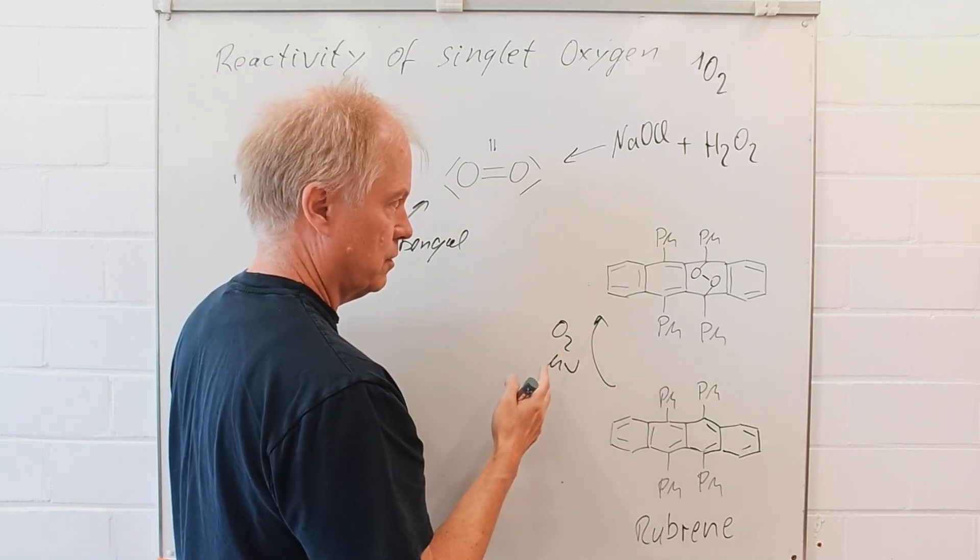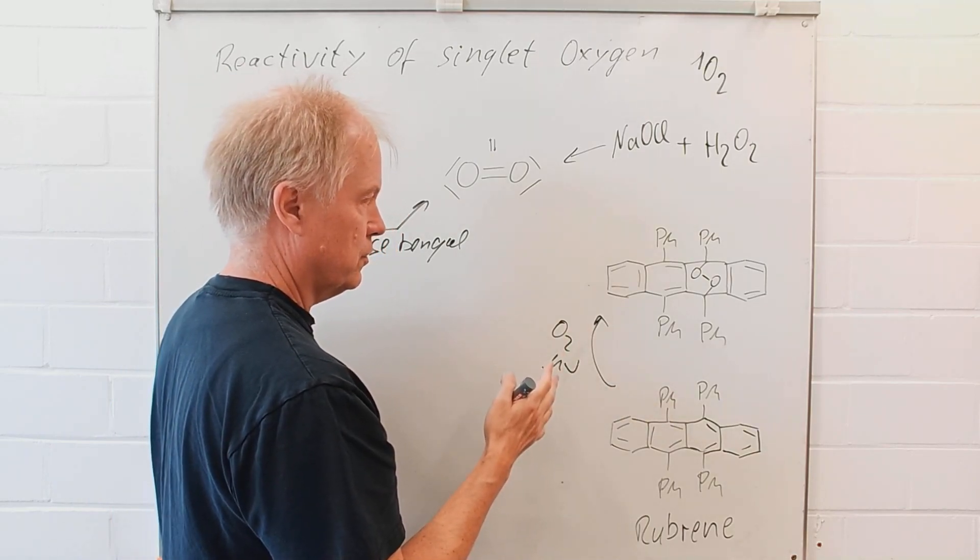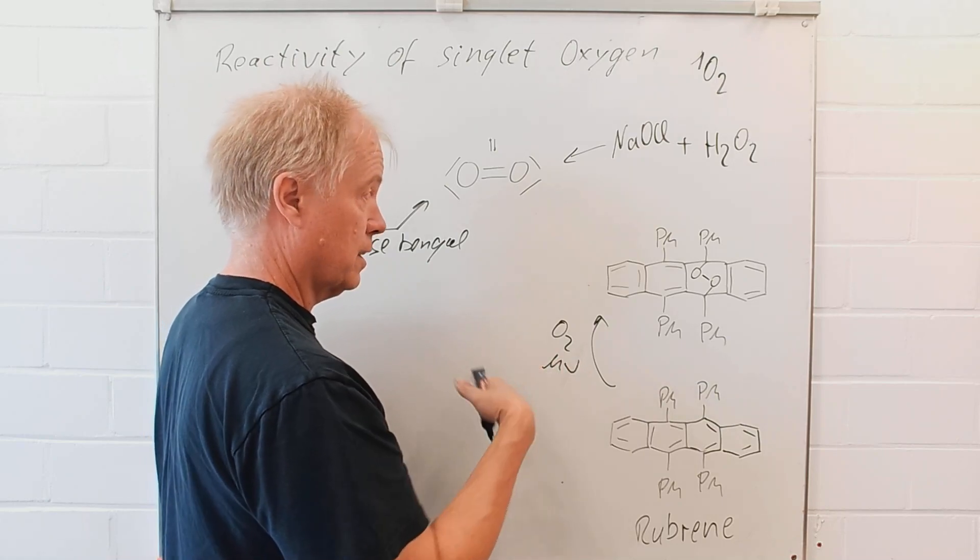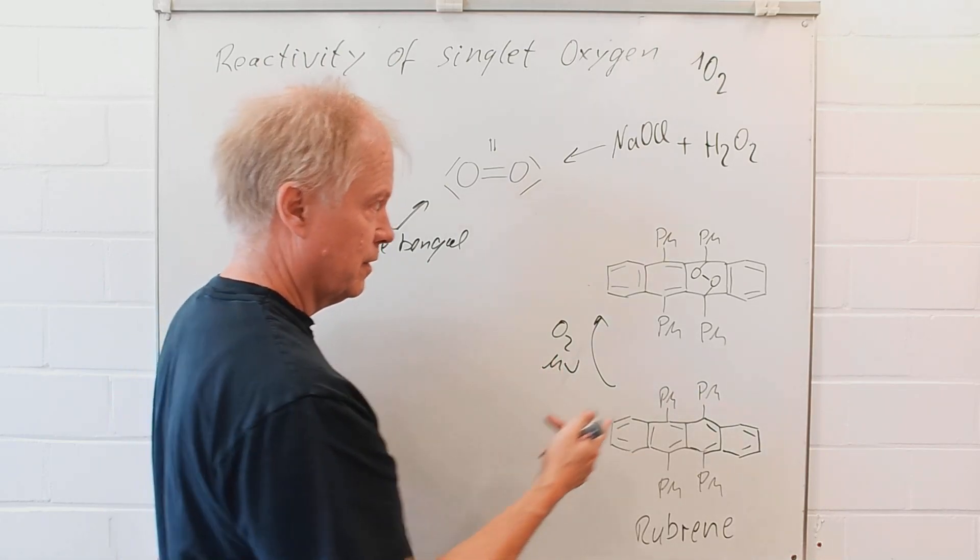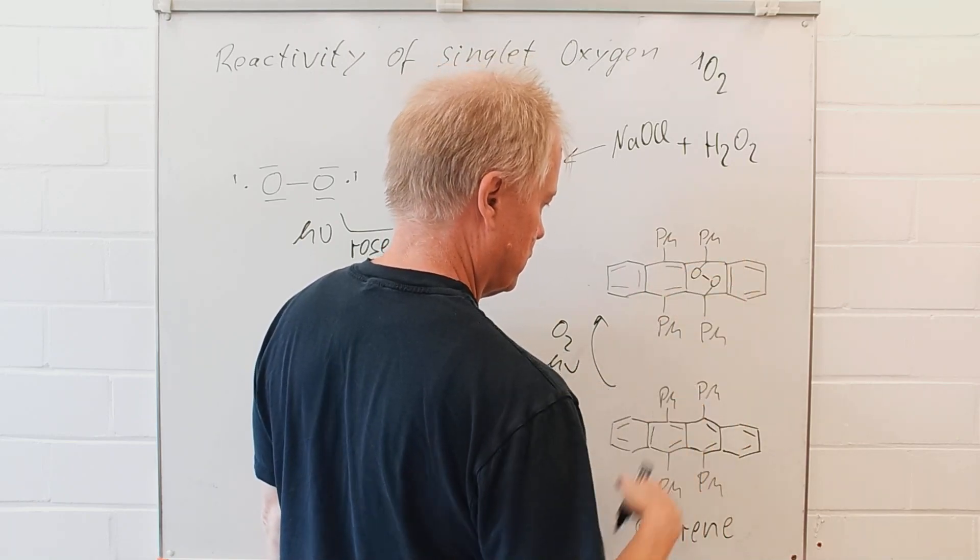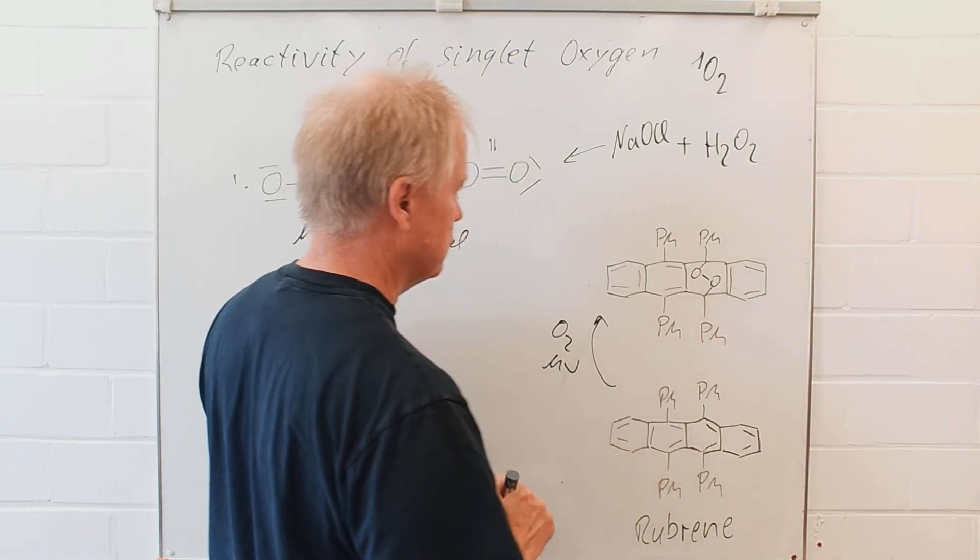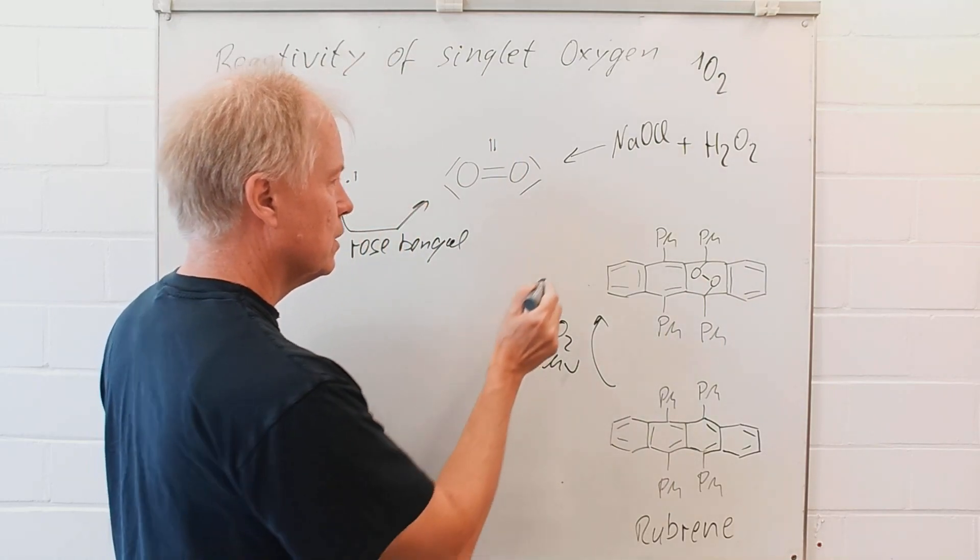And this is a colorless compound, since the pi system, the big pi system of rubrene is interrupted.